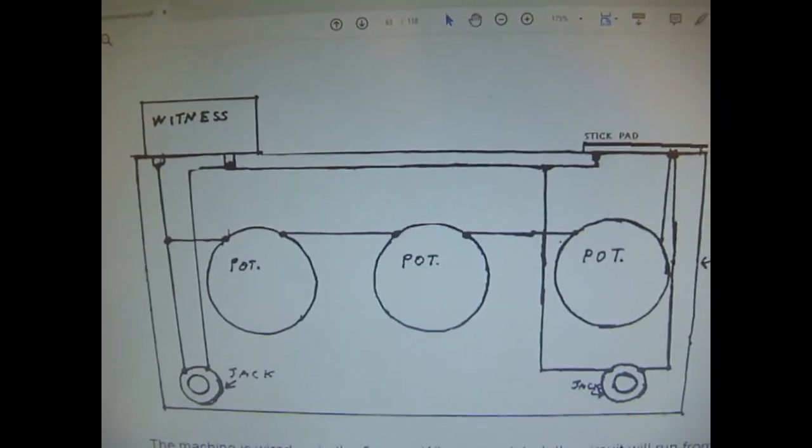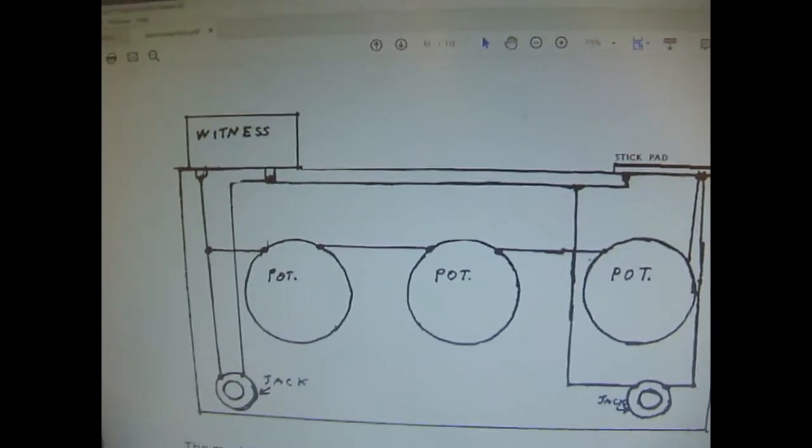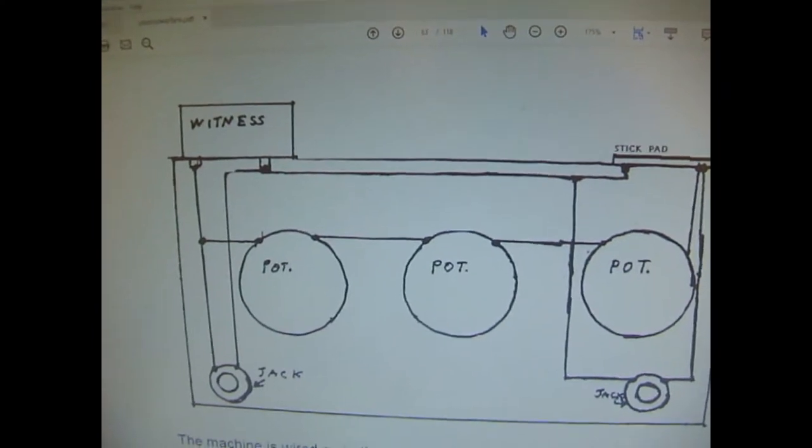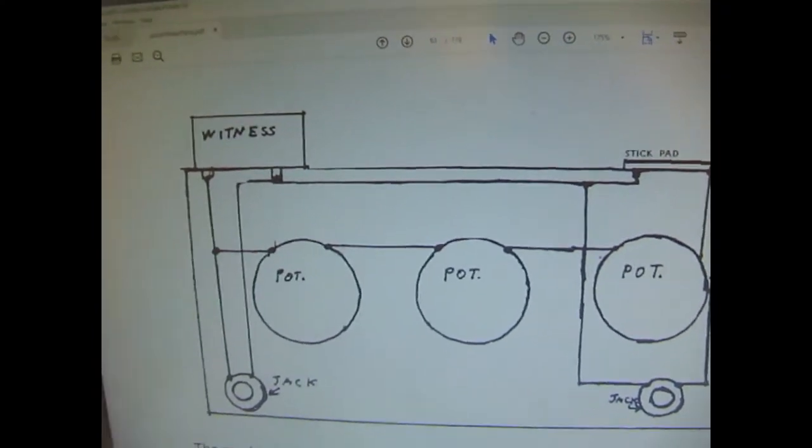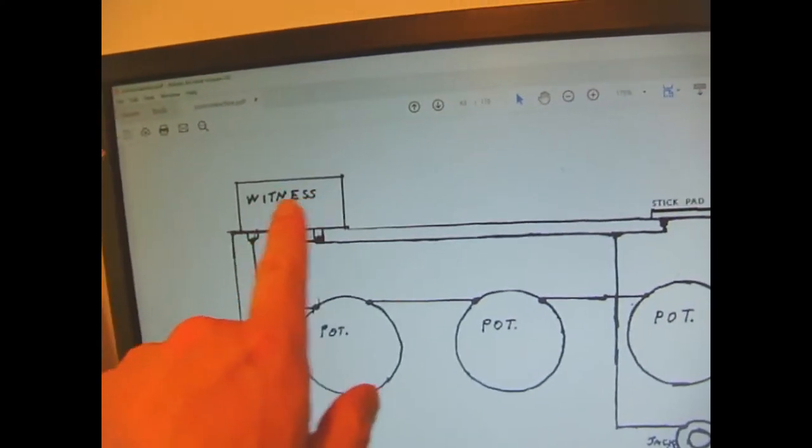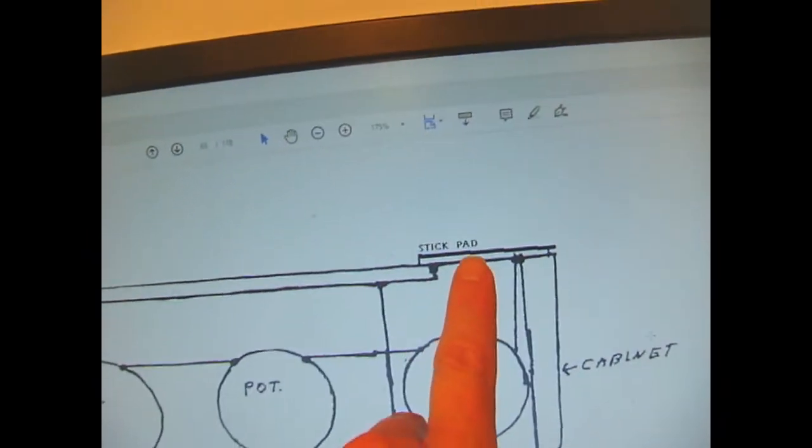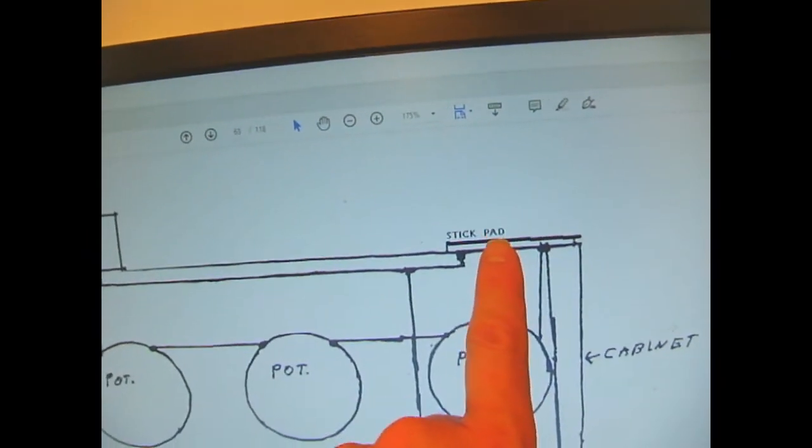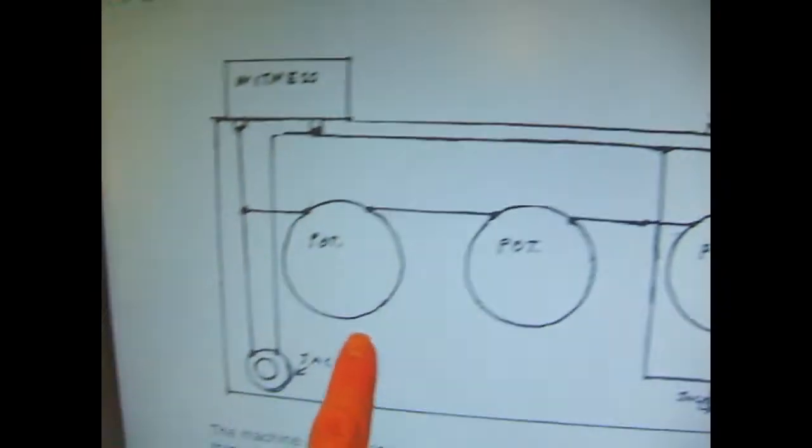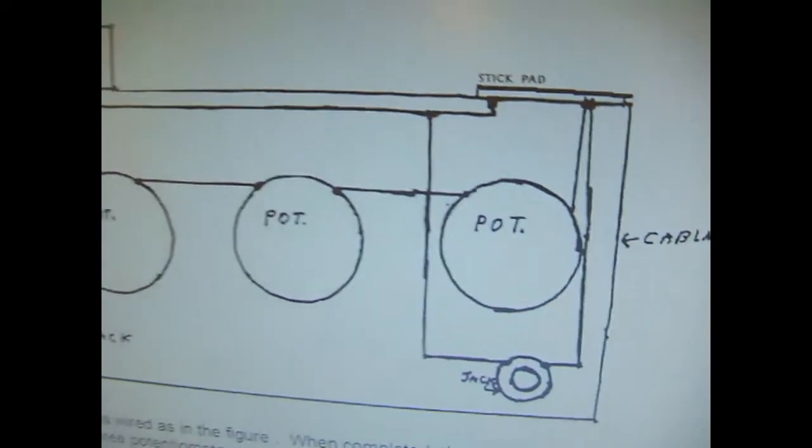So this is the original circuit diagram of the three-dial box from Charles Cosmanio. He's got a can for his witness, I'm using a plate. He's then got a stick pad, which acts as the second plate, but he's also got one headphone jack and another headphone jack there.